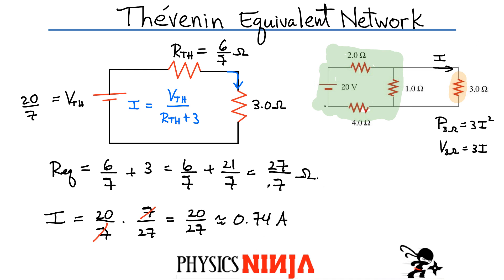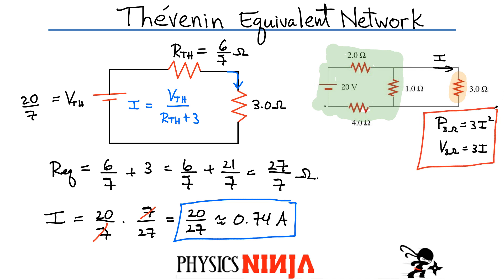That's exactly the same result obtained using Kirchhoff's laws. So we know the current flowing through this three ohm resistance. If wanted, you could then solve for the power and the voltage across that three ohm resistance. It's a really powerful technique — you simply pick the resistance you want to isolate, place it in the equivalent network, find the Thevenin equivalent resistance and voltage, and it becomes a very simple circuit to solve. Try this problem using one of the other resistors, compare your answer to Kirchhoff's laws, and you'll be well on your way to understanding this.